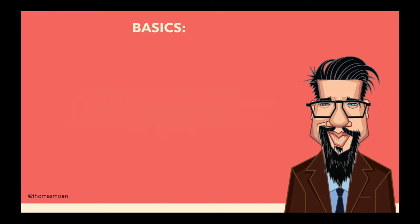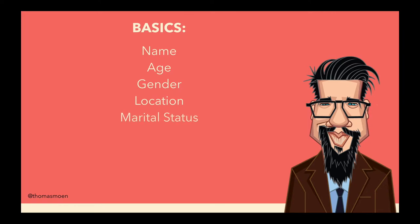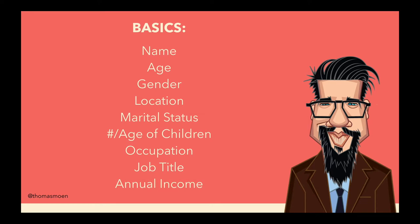Let's go into the elements you need to cover when creating your avatar. I always start with the basics so I can start to picture a person while I'm writing or making a video. I always give my avatars a name, and you should write down the age, gender, where your avatar is currently living — both city and country — whether they're married, dating, or single, if they have any children and what age, their occupation, job title, and how much money they make per year. All these things make it easier for you to know how and when to communicate to them.